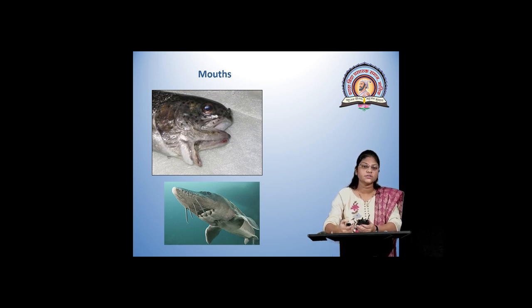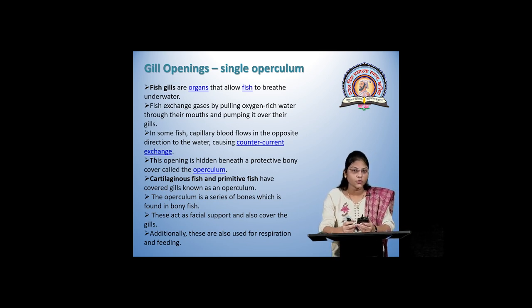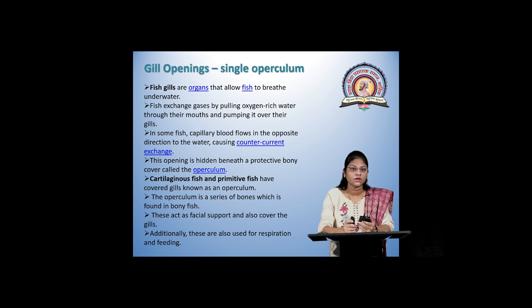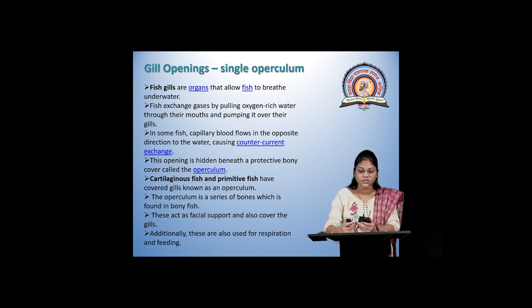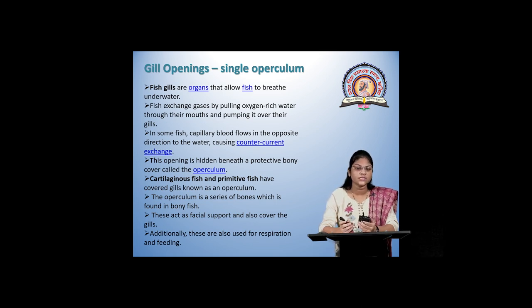Here we can see the variation seen in the mouths. Next is the gill opening and single operculum. Gills are important organs because they help the fish in breathing — exchanging gases with the environment. The gills function as a counter-current exchange system because both blood and water flow in opposite directions to each other, which helps increase oxygen-rich intake. In some fishes, the gills are covered by the operculum, which is the flap-like opening. During breathing it opens, and when breathing stops it gets closed.